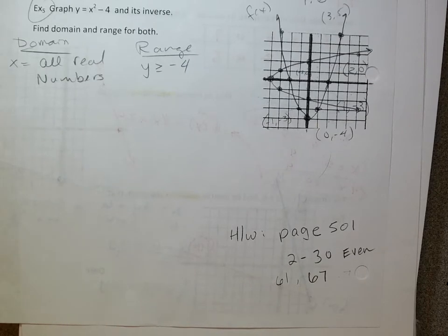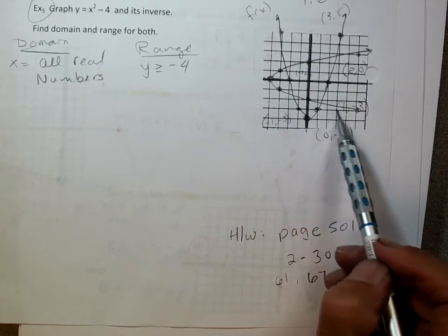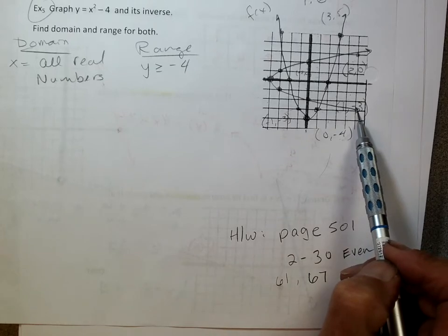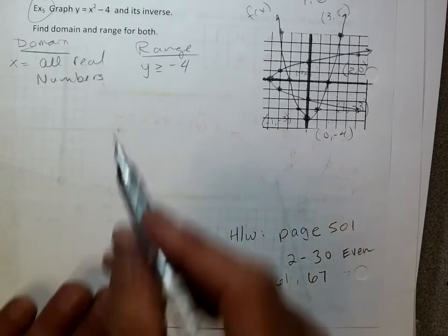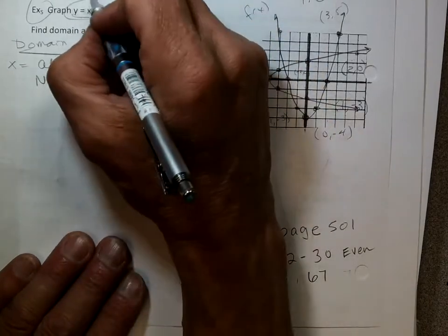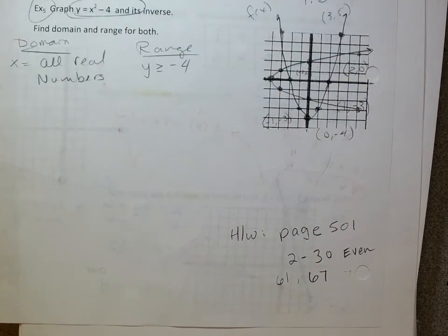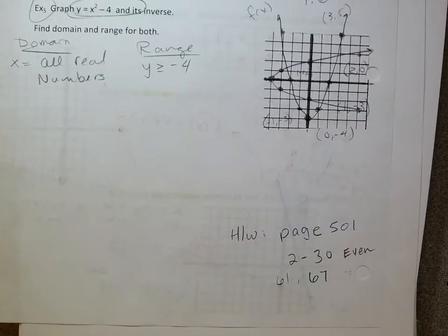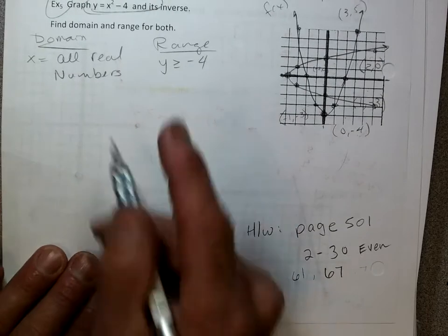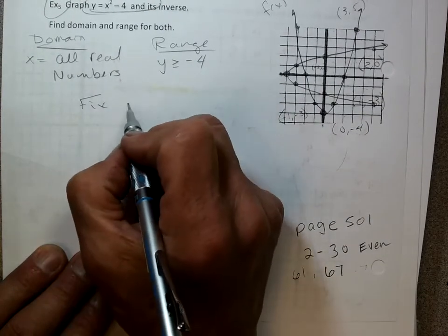Here's the big question: is this sideways graph a function? No. Therefore, this graph has no inverse because its inverse isn't a function. We can't draw that because it's not a function. But we can fix it — we can fix our function.